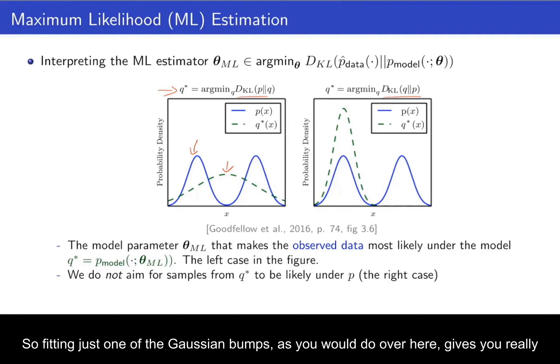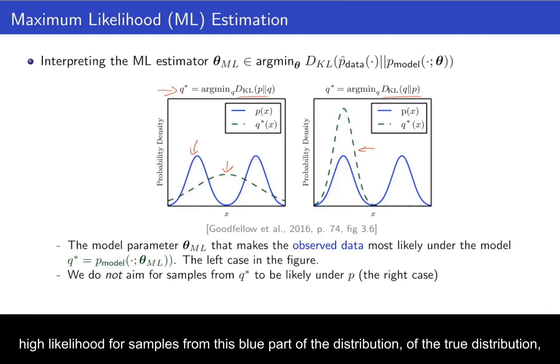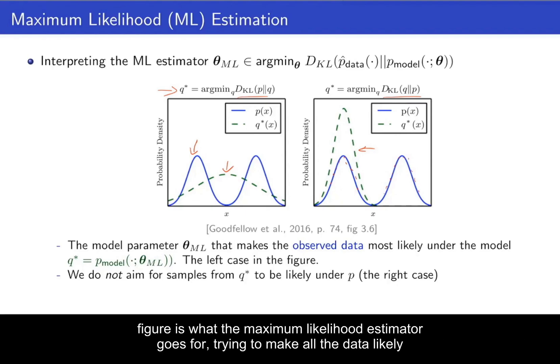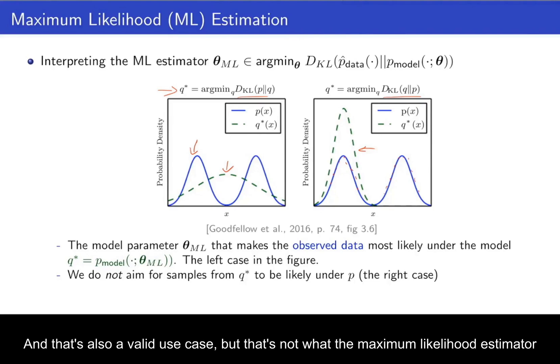So fitting just one of the Gaussian bumps, as you would do over here, gives you really high likelihood for samples from this blue part of the distribution, of the true distribution, but would give very low probability to samples from this part of the true data. And that's why the maximum likelihood estimator does not choose this. So the left case in this figure is what the maximum likelihood estimator goes for, trying to make all the data likely under the model. And the right case, that would try to make samples from Q likely under P. And that's also a valid use case, but that's not what the maximum likelihood estimator does.